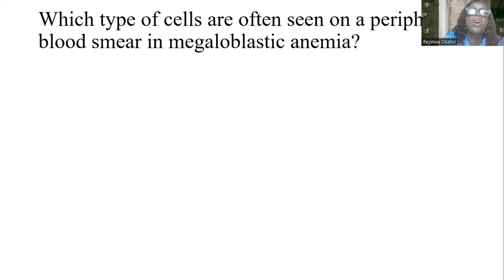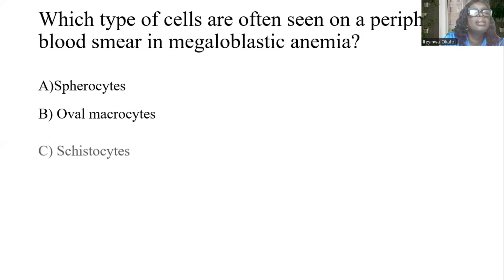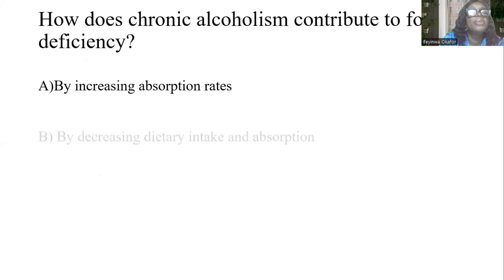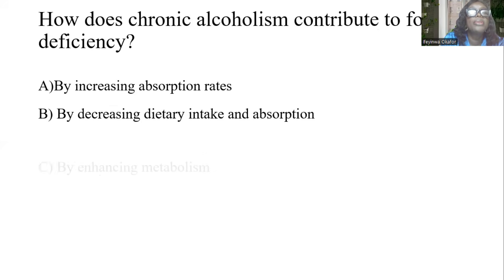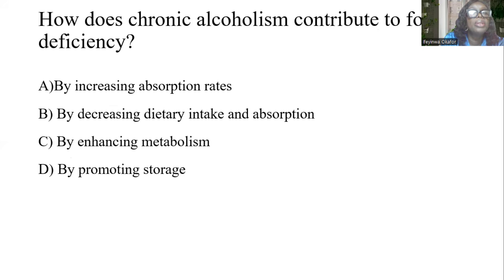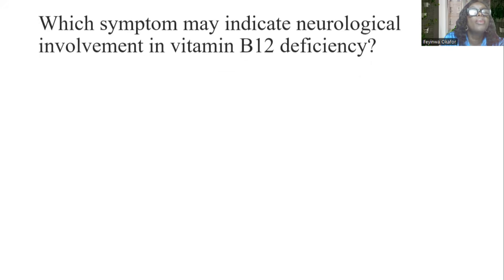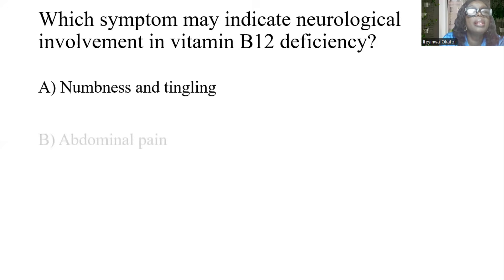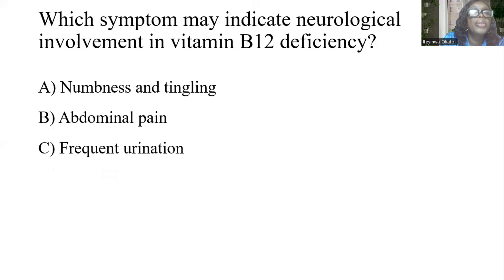Which type of cells are often seen on the peripheral blood smear in megaloblastic anemia? A, spherocytes. B, oval macrocytes. C, schistocytes. D, target cells. And the answer is B, oval macrocytes. How does chronic alcoholism contribute to folate deficiency? By decreasing dietary intake and absorption. The answer is B. Which symptom may indicate neurological involvement in vitamin B12 deficiency? A, numbness and tingling. B, abdominal pain. C, frequent urination. D, skin rash. The answer is A, numbness and tingling.